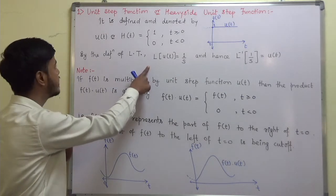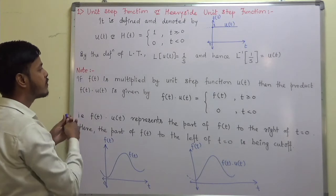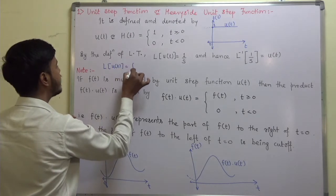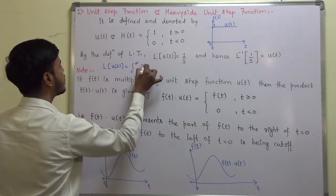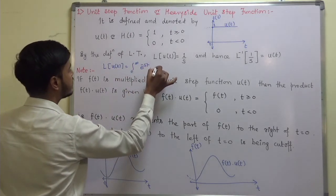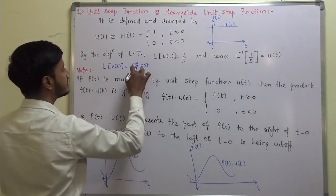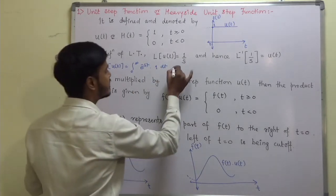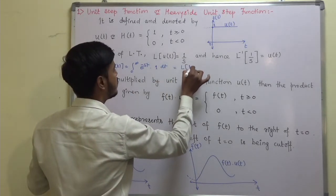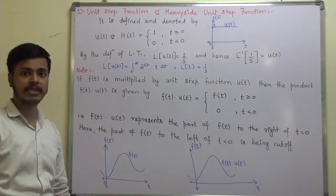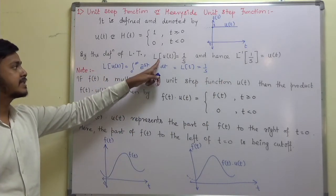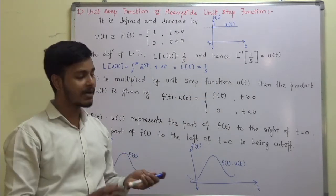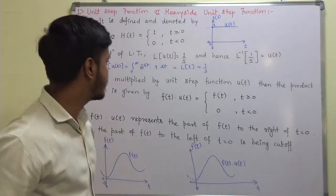Now talking about the Laplace transform: by the definition of the Laplace transform, the Laplace transform of u(t) equals the integral from 0 to infinity of e^(−st) times u(t) dt. Since u(t) equals 1 for t from 0 to infinity, this becomes the Laplace transform of 1, which is simply 1/s. So the Laplace transform of the unit step function is 1/s, and hence the inverse Laplace transform of 1/s is u(t).